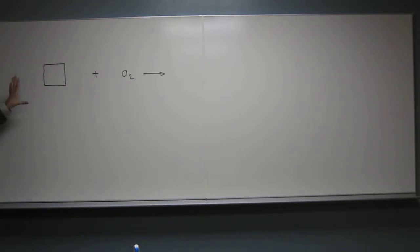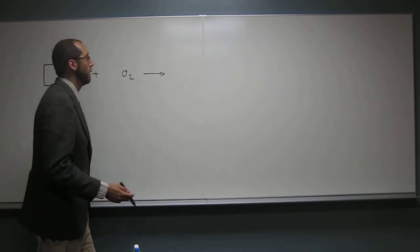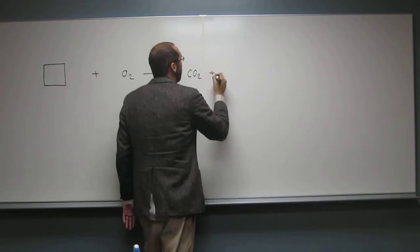One was the radical, which we just did. The other one's the combustion reaction. It's a combustion reaction. Remember, whenever you have a combustion reaction of an alkane, the products are always going to be what? Carbon dioxide and water.